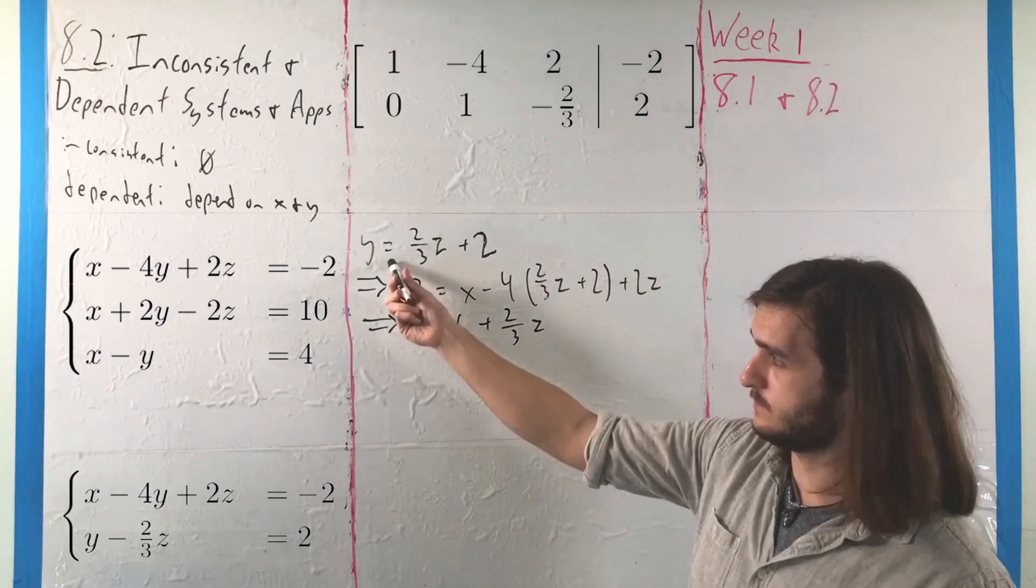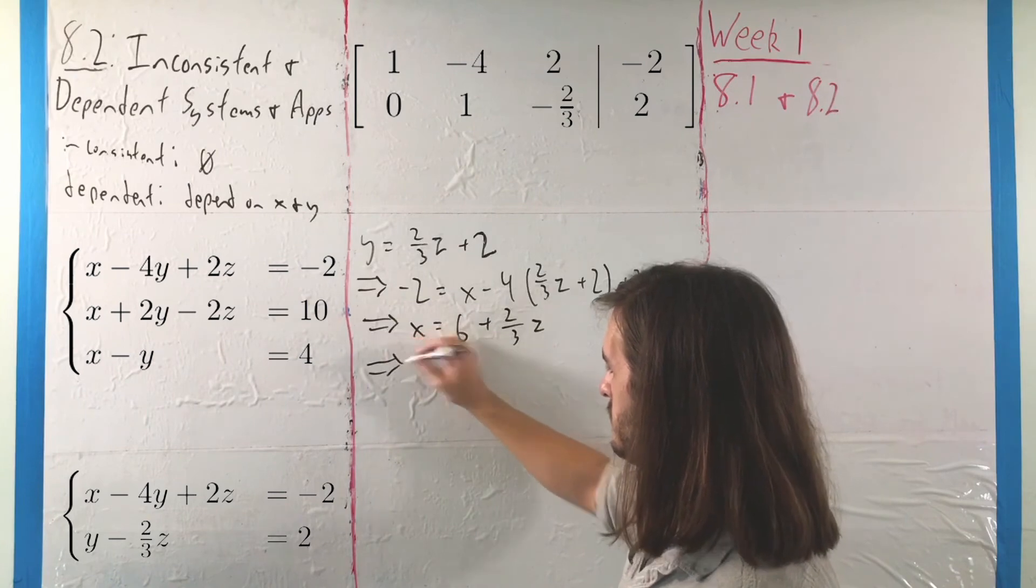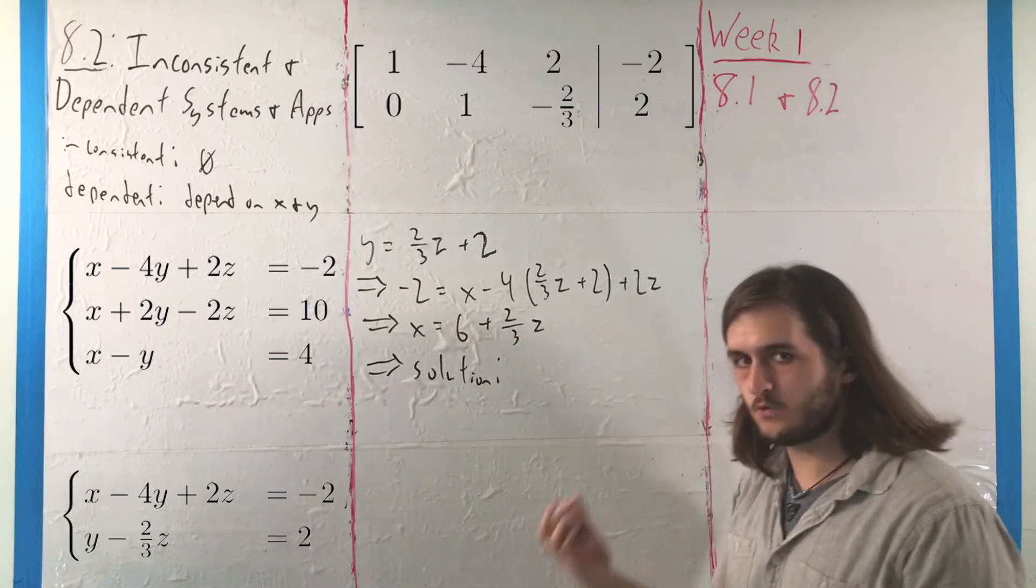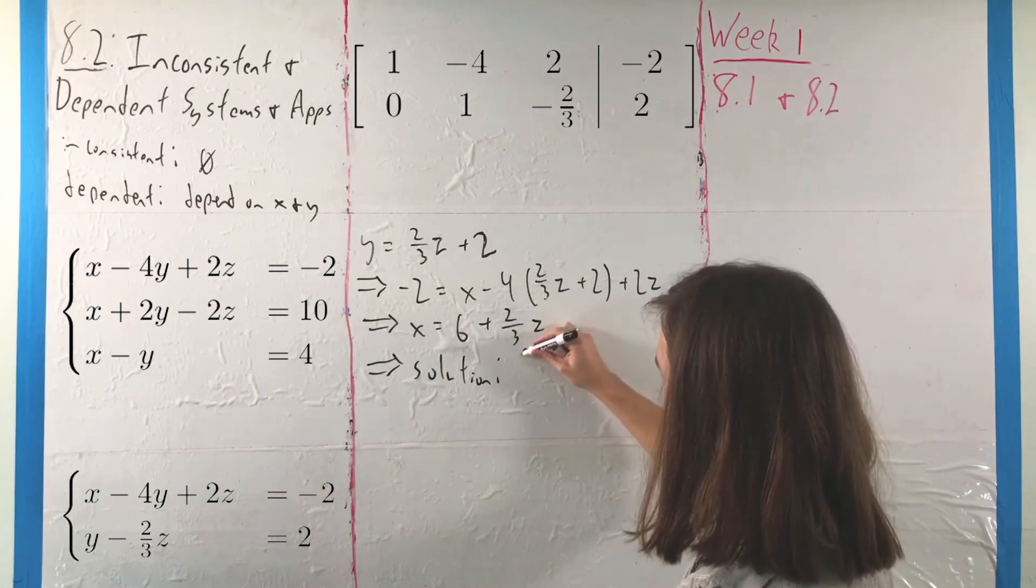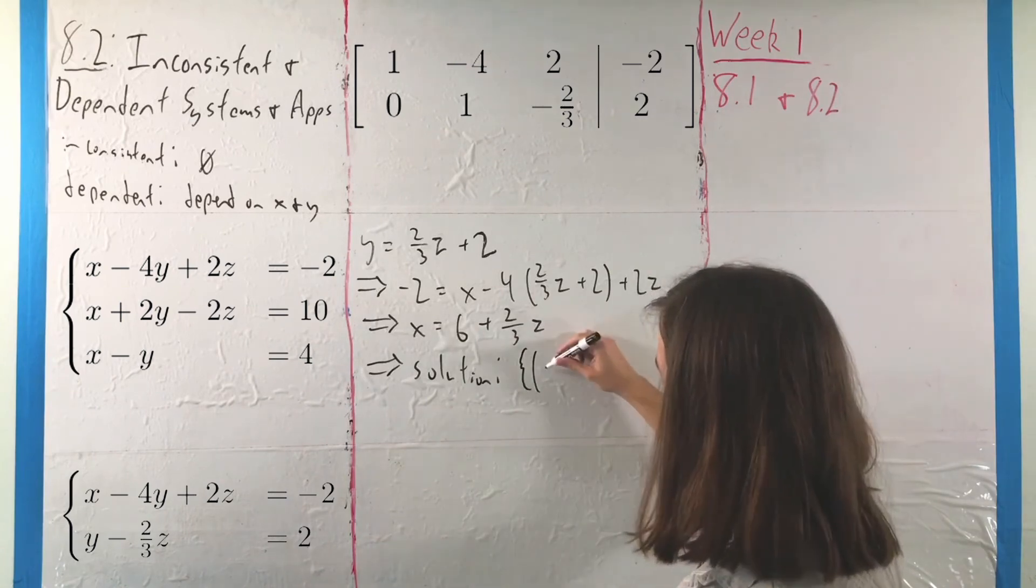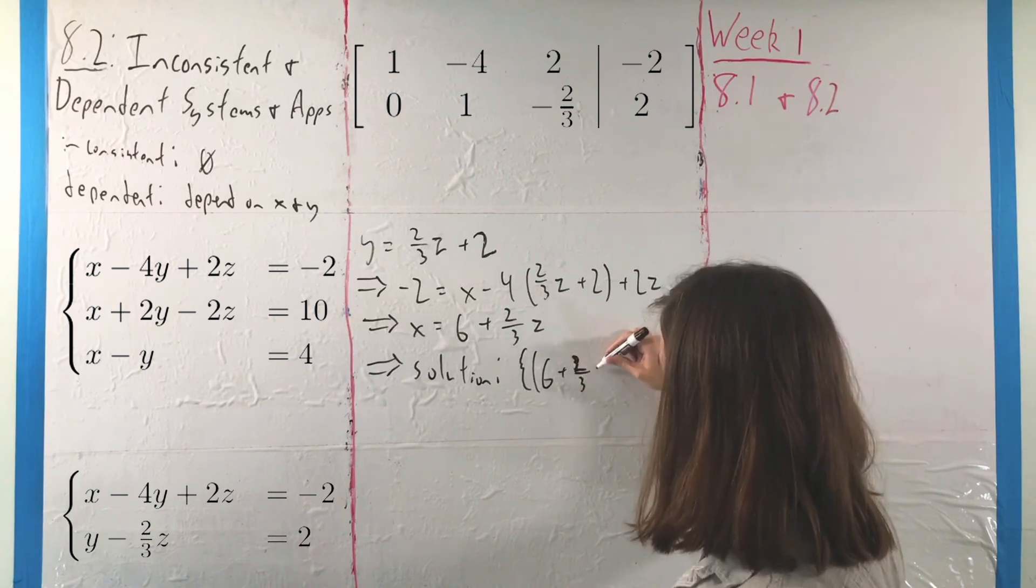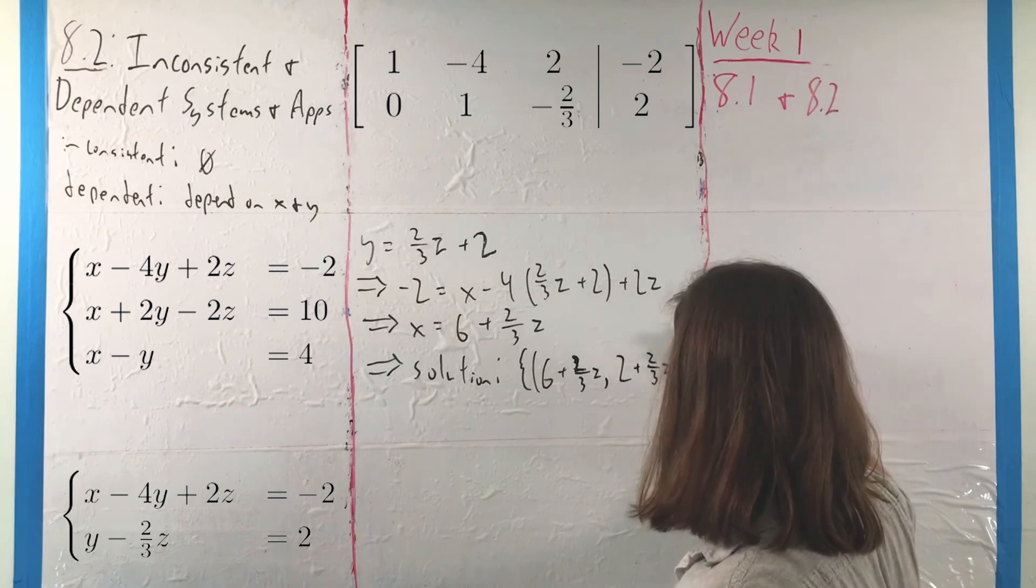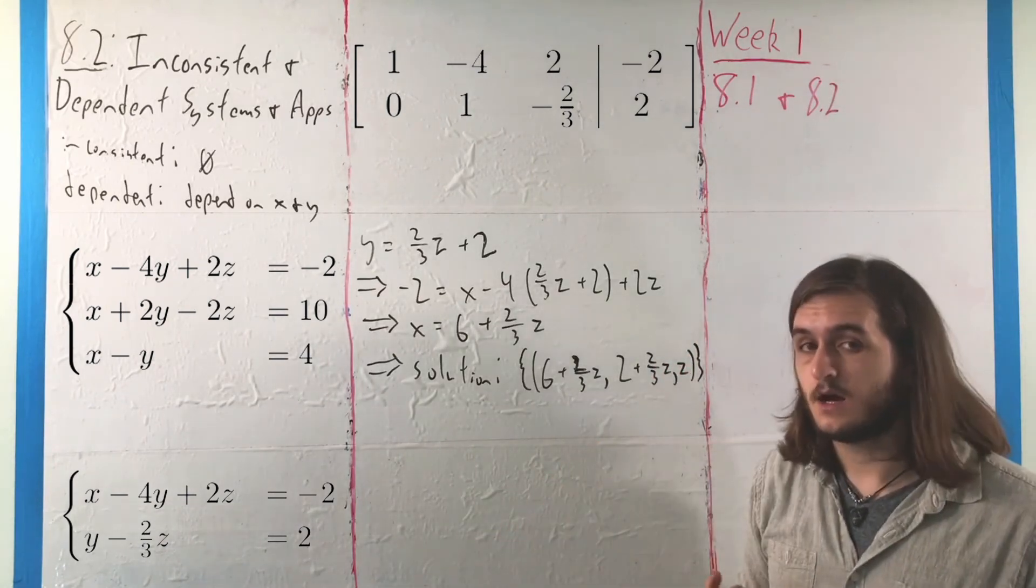Which means, if we think about our solution, we've got something in terms of y, something in terms of x, and z is kind of free. So what you'd end up with is that our solution set is a whole range of options that we can possibly have, so long as those options fit the right pattern. Where x can be anything of form 6 plus 2 thirds z, y is anything of form 2 plus 2 thirds z, and z is in a sense free. We say that our solution depends on z, as it were.